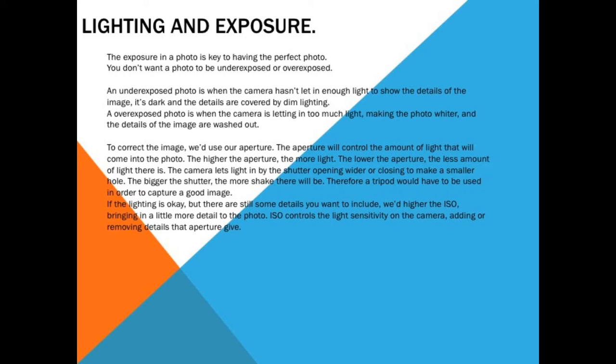To correct the image, we'd use our aperture. The aperture will control the amount of light that will come into the photo — the higher the aperture, the more light that will come in; the lower the aperture, the less amount of light there will be. The camera lets in light by the shutter opening wider and closing to make a smaller hole. Therefore, using a tripod will be good in order to capture a good image. If the lighting is okay but there are still some details you want to include, we'd raise the ISO, bringing in a little more detail in the photo. The ISO controls the light sensitivity of the camera, adding details that the aperture doesn't give.